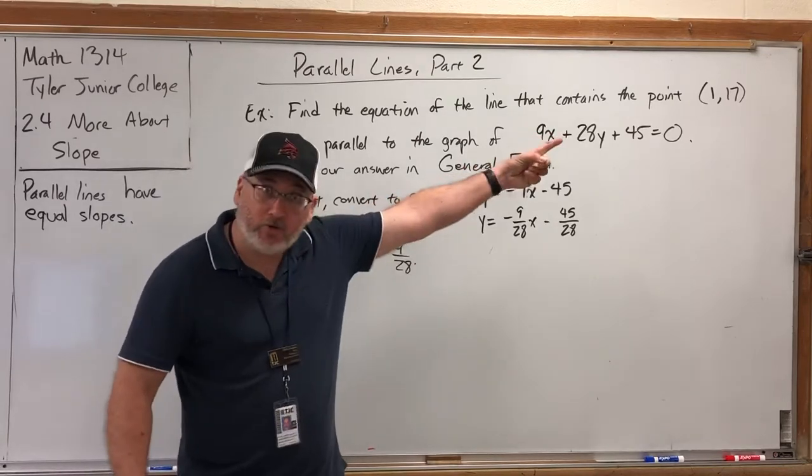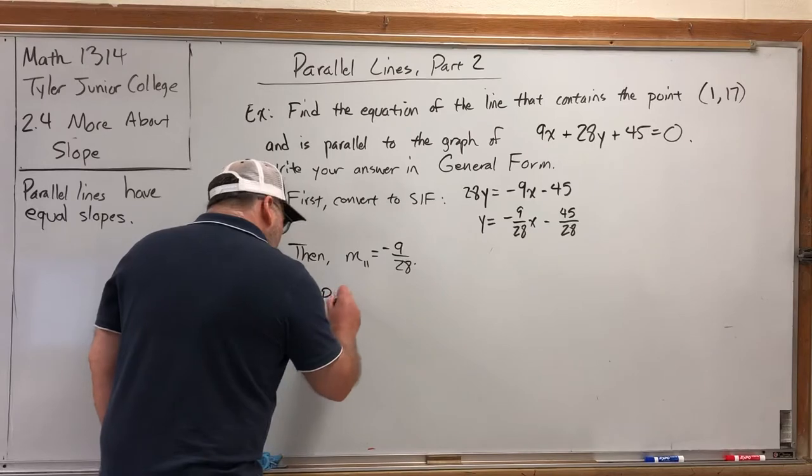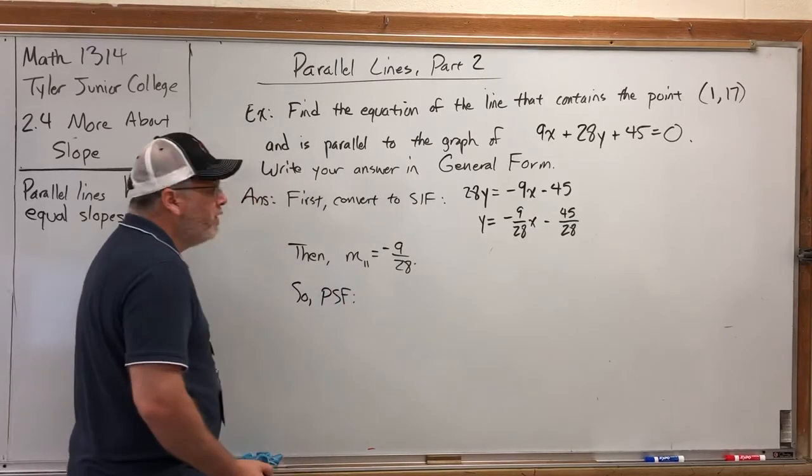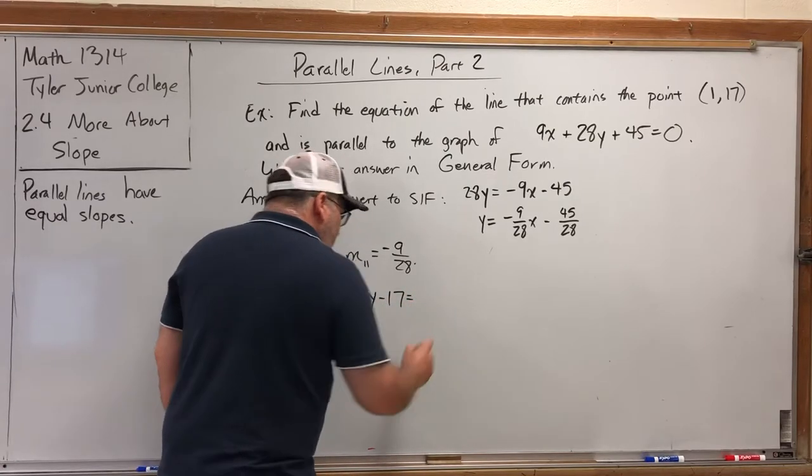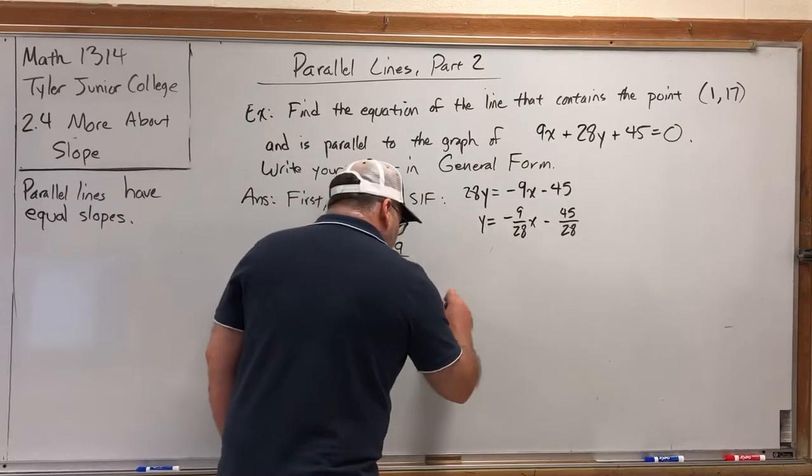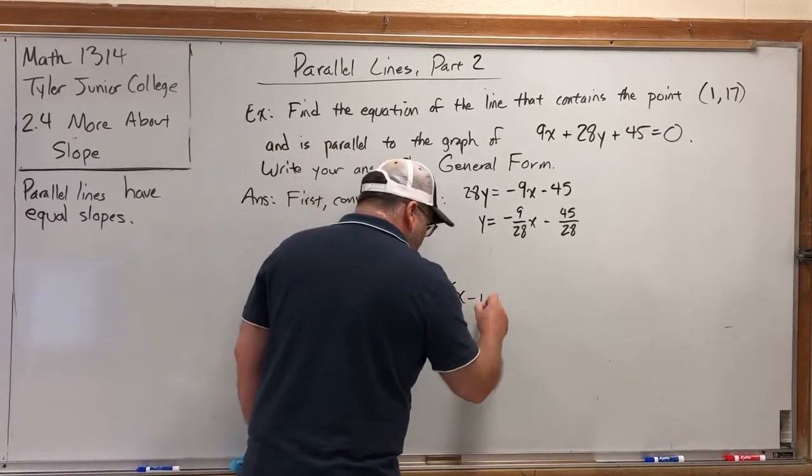So now I have the two ingredients I need to build the line I want. I now know its slope, and I now know a point it goes through, (1, 17). So the point-slope form is Y minus 17 equals negative 9/28 times (X minus 1).